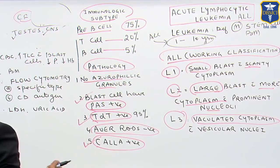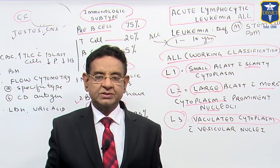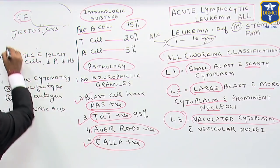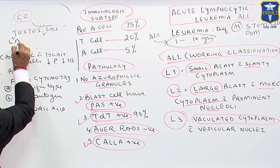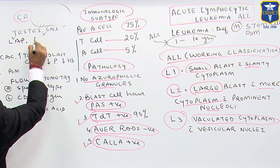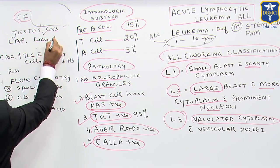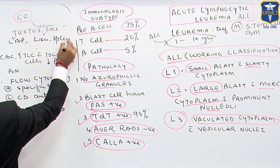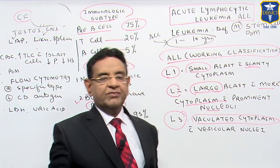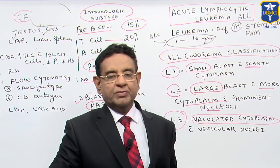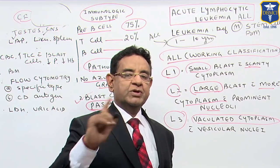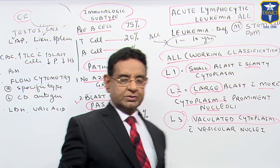When a patient comes to us, we also find generalized lymphadenopathy, the liver is enlarged, and the spleen is also enlarged. So this gives us hepatosplenomegaly with generalized lymphadenopathy. This also happens in acute myeloid leukemia.